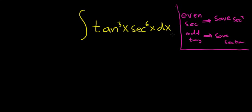So even secant, save a secant squared. Odd tangent, save a secant tangent. Let's think about what's going on here. So here we have a choice. We can do this problem two different ways.